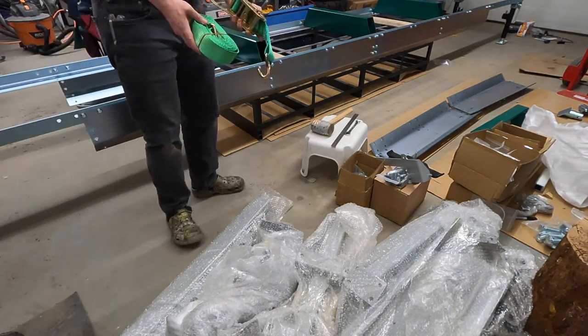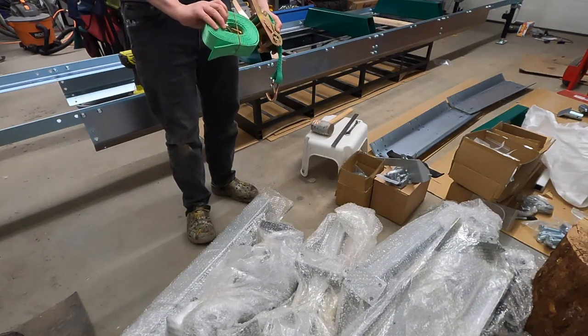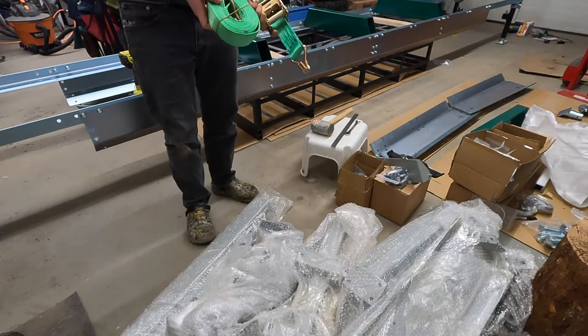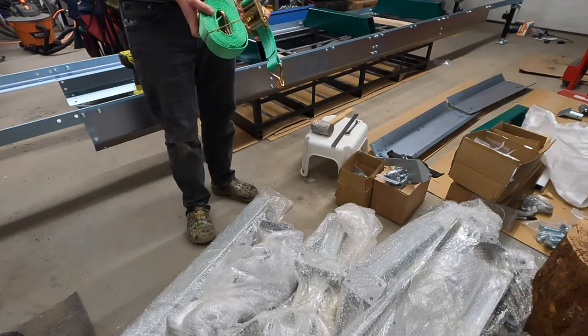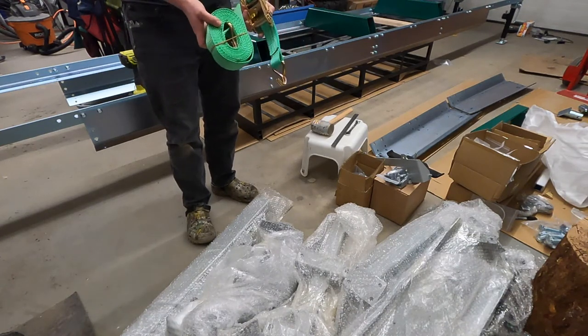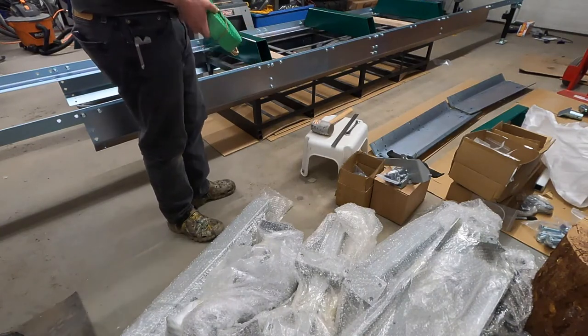So you may or may not remember as we were going through the unboxing, if you watched that video, I found this ratchet strap a little mysterious. I had no idea what it was for other than maybe to secure the saw head while in transit. Turns out it is for that but also it's for part of the assembly process. I'm going to show you that now.